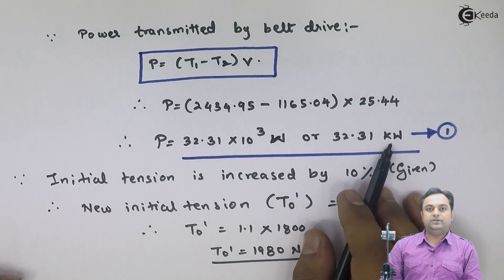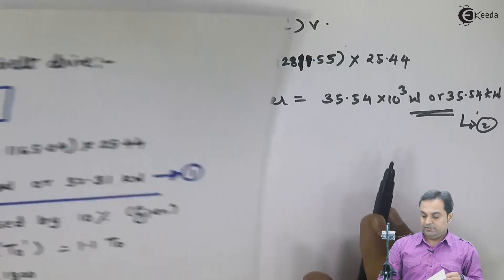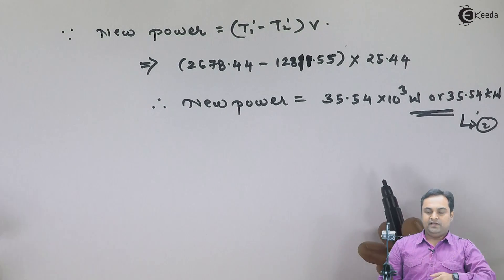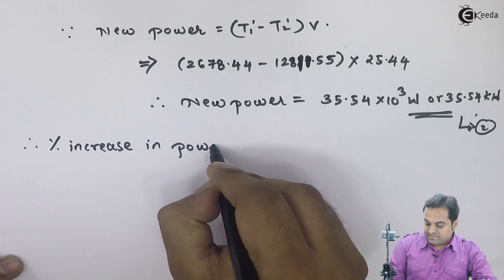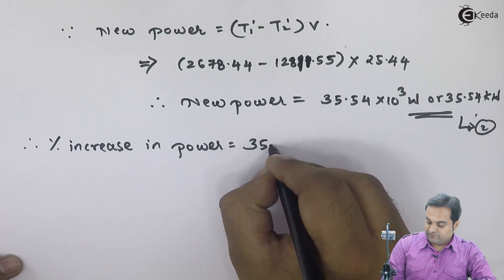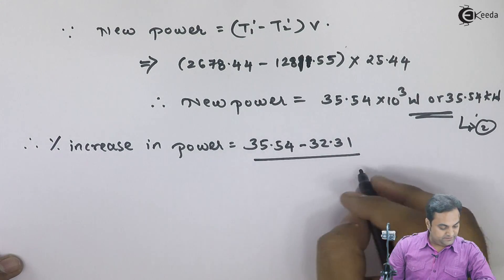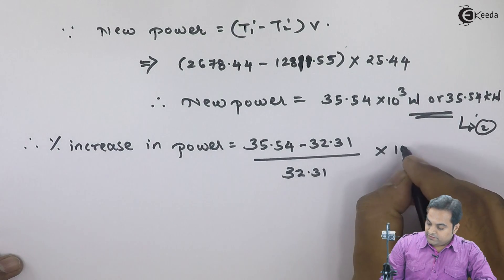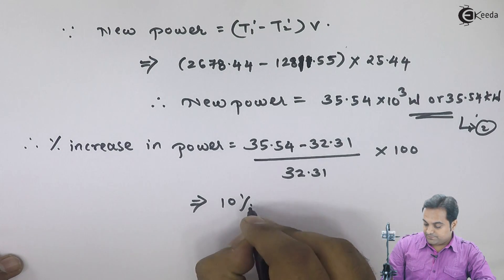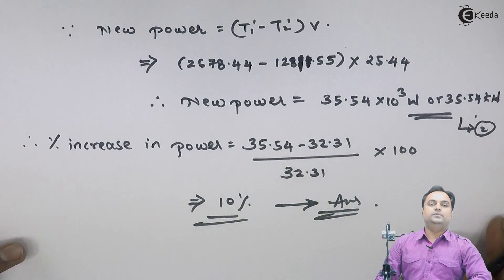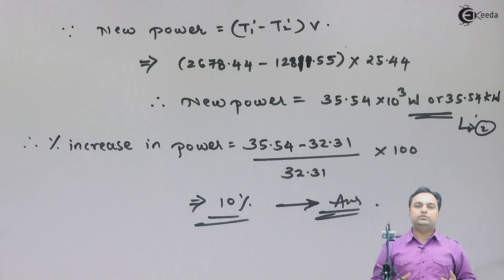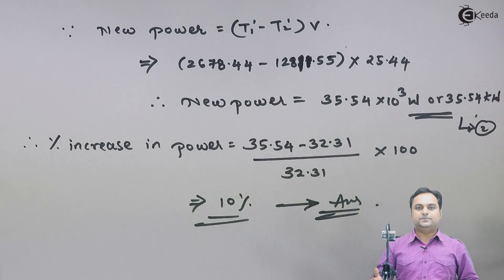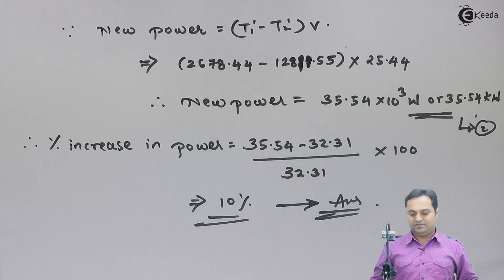Initially the power was 32.31 kilowatts; after increasing belt tension by 10%, the new power is 35.54 kilowatts. Percentage increase in power = (35.54 - 32.31) / 32.31 × 100 = 10%. This means increasing the initial tension by 10% also increases the transmitted power by 10%, confirming that mounting the belt with higher tension increases power transmitted and hence the efficiency of the belt drive.